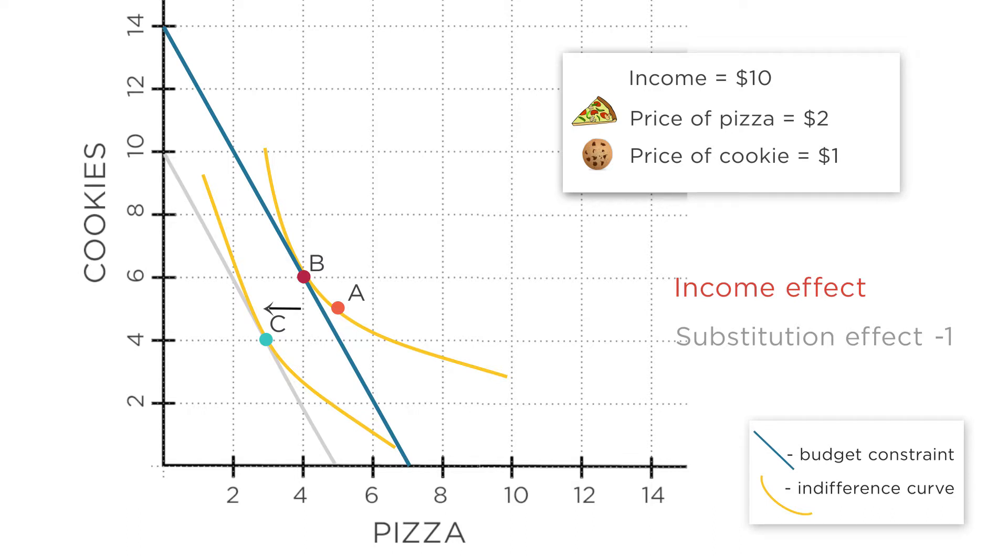The income effect is about what happens if you change income while keeping prices the same. Now look at the movement from point B to point C. Here you're keeping prices constant, because you're moving from the imaginary budget constraint to the final real budget constraint, and they have the same slope.